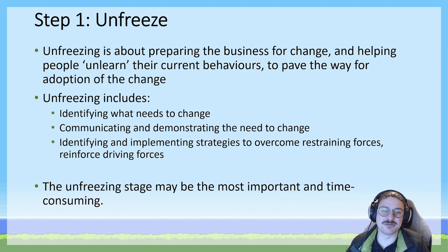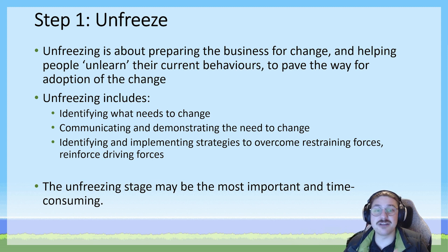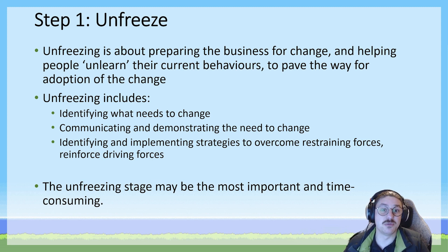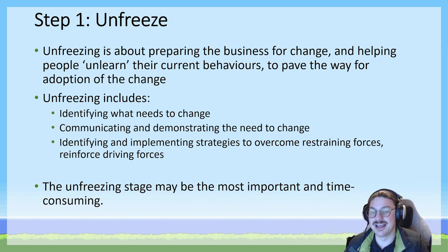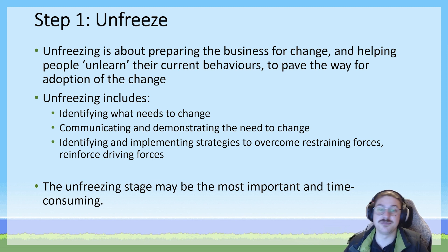Lewin's theory is that businesses that follow these three steps are always going to be able to implement change effectively — that is to say, change cannot fail if you follow these three steps. The first step, unfreeze, is about preparing your business for change. This is where Lewin's force field analysis has overlap with this theory: part of the unfreeze step involves identifying the driving forces that will support the change and the restraining forces that will present a barrier to effective implementation.